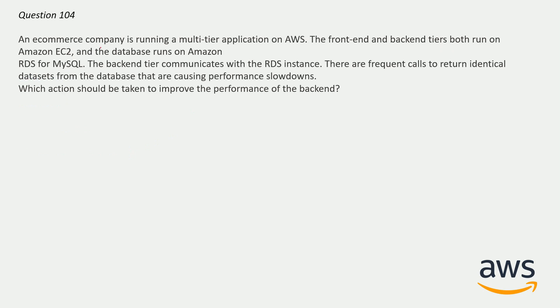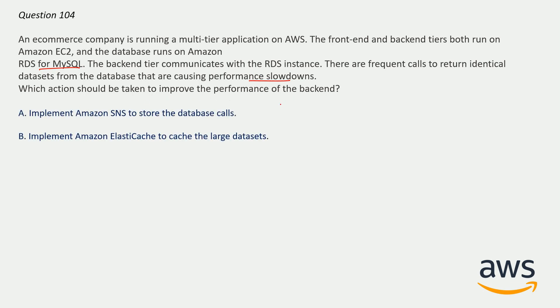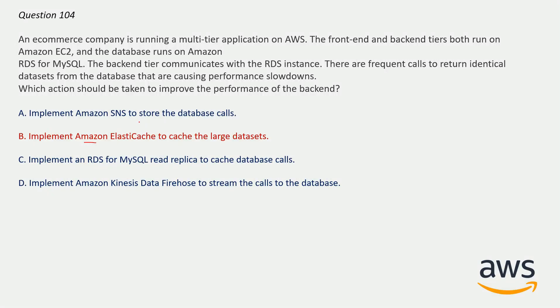Question number 104: An e-commerce company is running a multi-tier application on AWS. The front-end and back-end tiers both run on Amazon EC2 instances and the database runs on Amazon RDS for MySQL. The back-end tier communicates with the RDS instance, and there are frequent calls returning identical data sets from the database causing performance issues. The correct answer is option B: Implement Amazon ElastiCache to cache the large data sets. ElastiCache is used when the same read request or query is performed over and over again. A clue for similar questions: if you see the terms 'identical' or 'similar,' always go with ElastiCache.